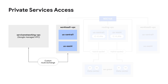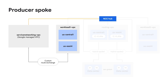It's worth noting that some Google services use a connectivity method called Private Services Access, or PSA, which relies on VPC peering. NCC has a feature called producer spokes, which allows you to connect your PSA VPC as a spoke to your NCC hub, making your PSA services fully routable in your NCC environment. It's advised to only use PSA if the service does not support PSC or if there's a specific required feature gap between PSA and PSC.